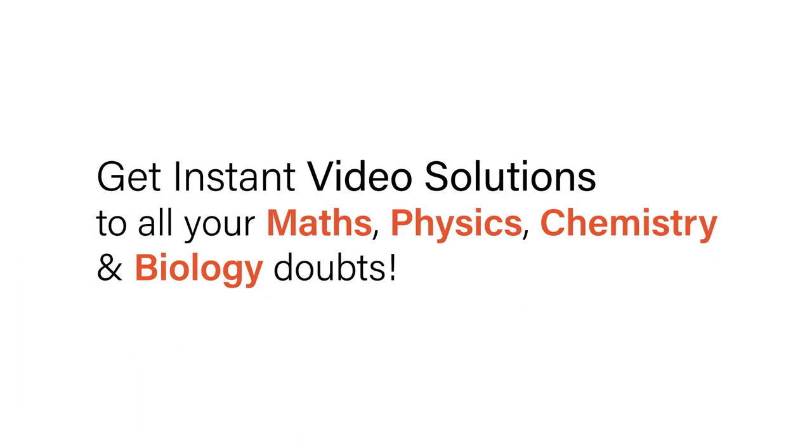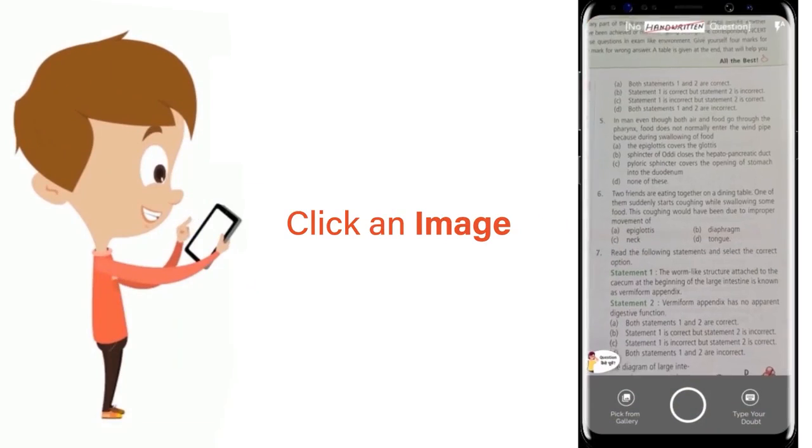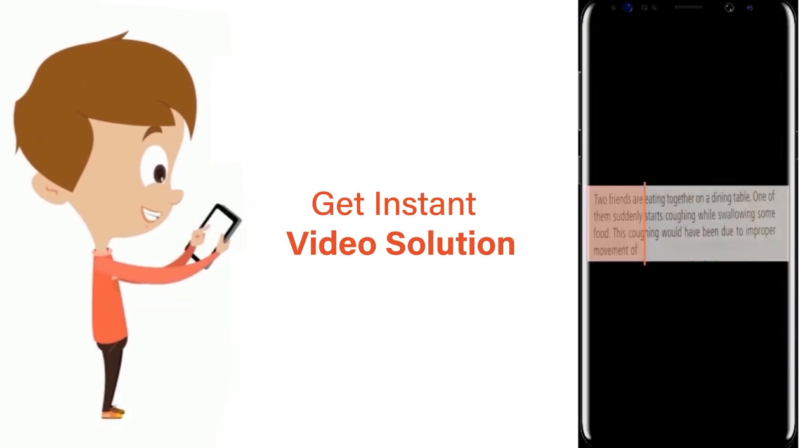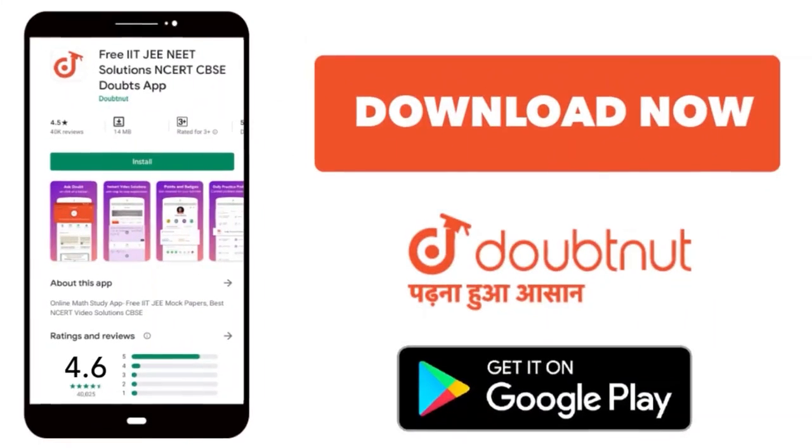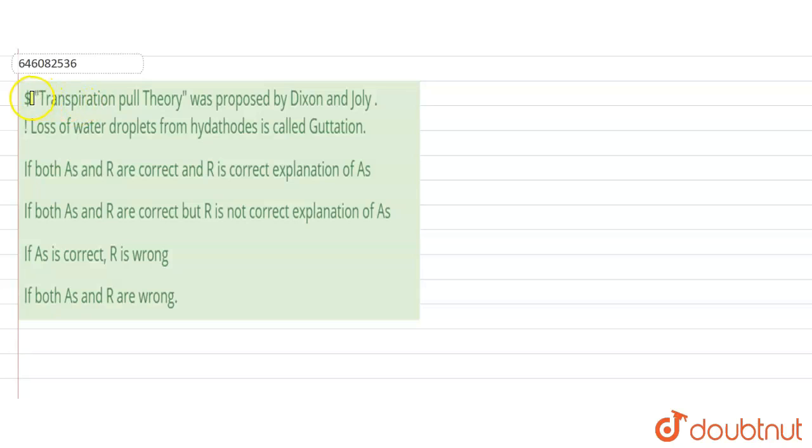With Doubtnet, get instant video solutions to all your math, physics, chemistry, and biology doubts. Just click the image of the question, crop the question, and get instant video solution. Download Doubtnet app today. So the question is that transpiration pull theory was proposed by Dickson and Jolly.